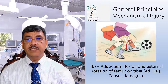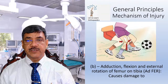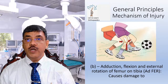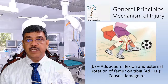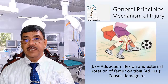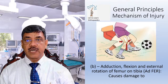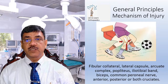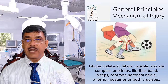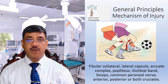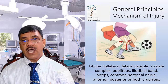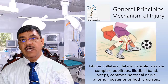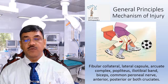The second subtype is adduction, flexion, and external rotation of the femur on the tibia — remember it as ADFIR. This causes damage to the fibular collateral ligament, lateral capsule, arcuate complex, popliteus, iliotibial band, biceps, common peroneal nerve, and anterior, posterior, or both cruciate ligaments.